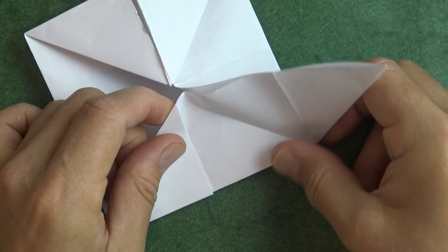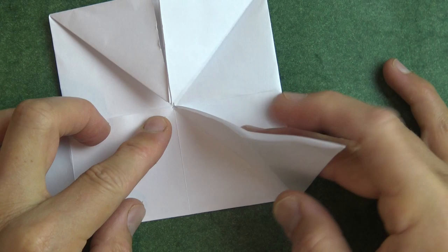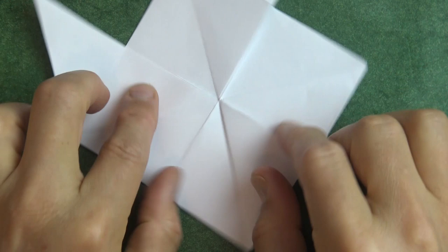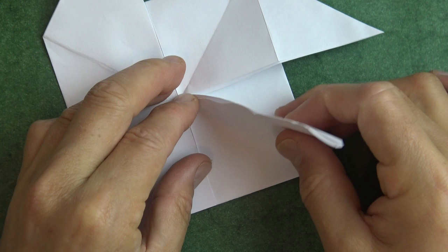Now holding here, take this flap and slide it out like that, and repeat on this side. And you can fold this flap down like this. Now rotate and we're going to do the same thing, so holding here, just pull out this flap like that.